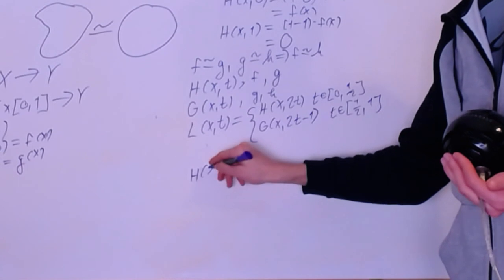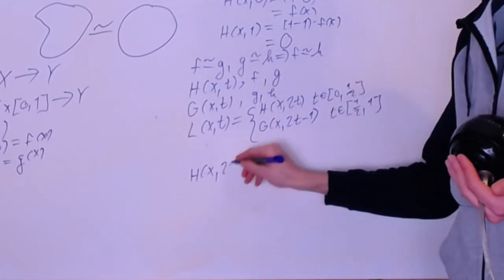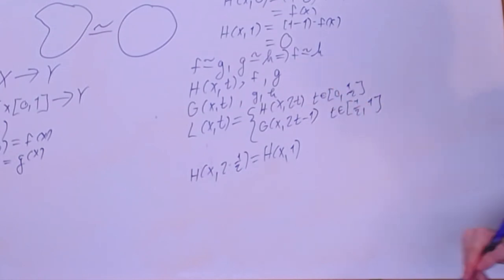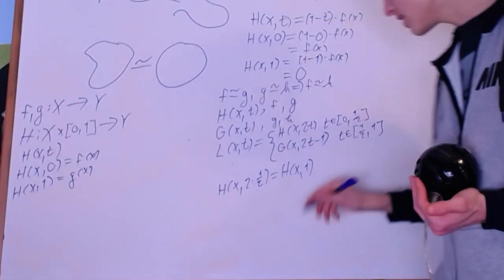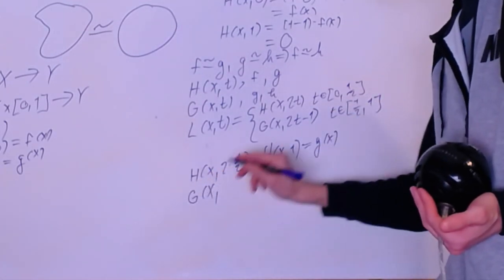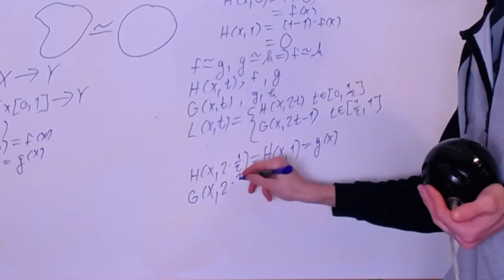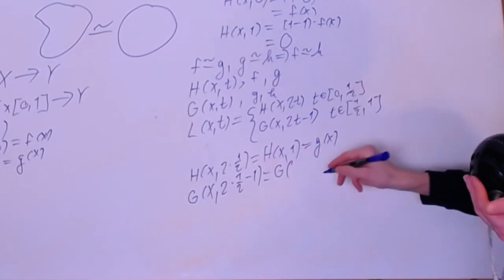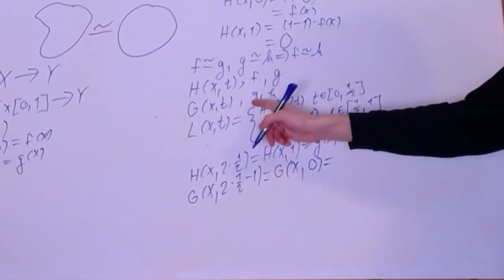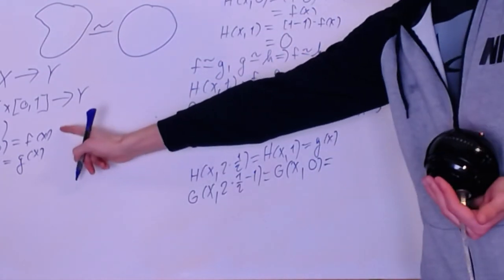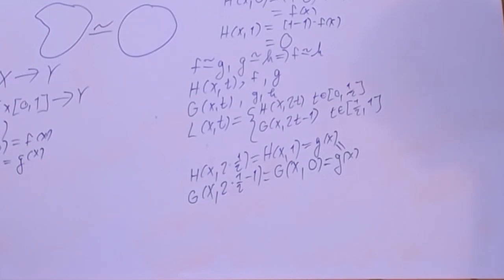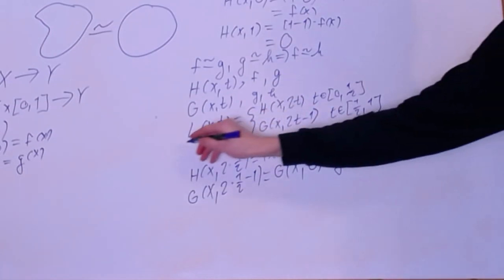Let's prove they agree at t = 1/2. Plugging into the first piece: H(x, 2·(1/2)) = H(x, 1). Since H is a homotopy from f to g, this equals g(x) by definition. Plugging into the second piece: G(x, 2·(1/2) − 1) = G(x, 0). Since G is a homotopy from g to h, G(x, 0) equals g(x) by definition. They are equal to each other, so by the pasting lemma, L is continuous.